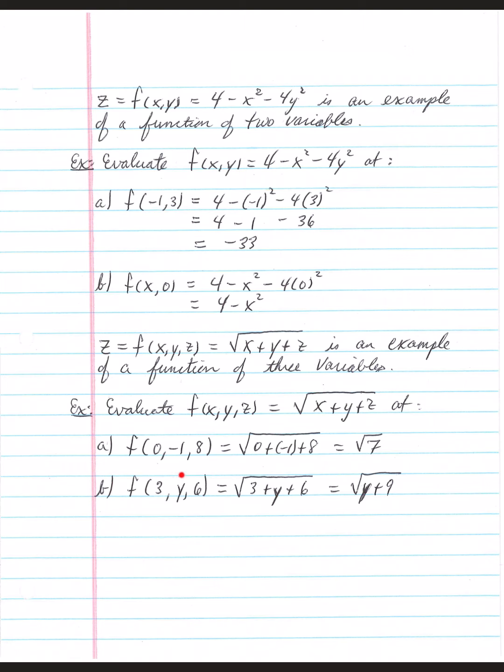Maybe the y variable is left open this time. 3 will still go in for x, y stays the same, and 6 goes in for z. Well, that gives us a total of y plus 9 under the radical.